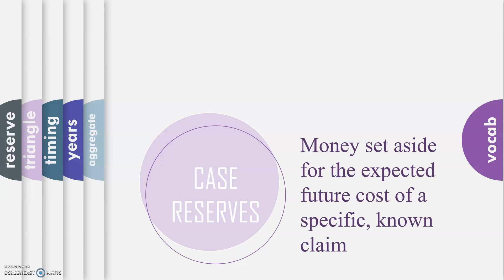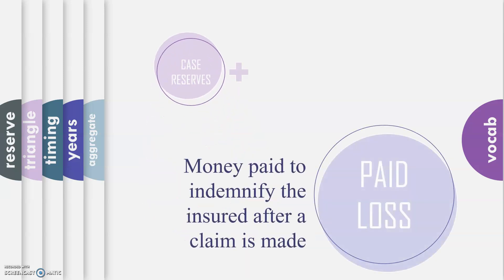A case reserve is money set aside for a specific claim. That means you have a claim, you call the insurance company, and the adjuster will say, I think this claim is going to cost us $5,000. So they set aside $5,000 for the expected future cost of that one specific known claim. That doesn't mean that they pay the person $5,000 — it's just hypothetical money set aside because we know the claim already happened. Paid loss is money that we actually paid to a specific claim. So if you call and say you had a car accident, and we pay some money out to the garage to fix your car, that would be some paid loss.